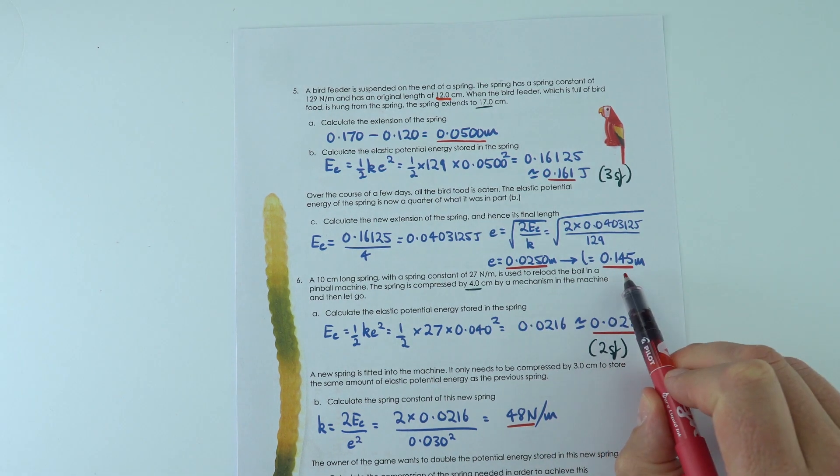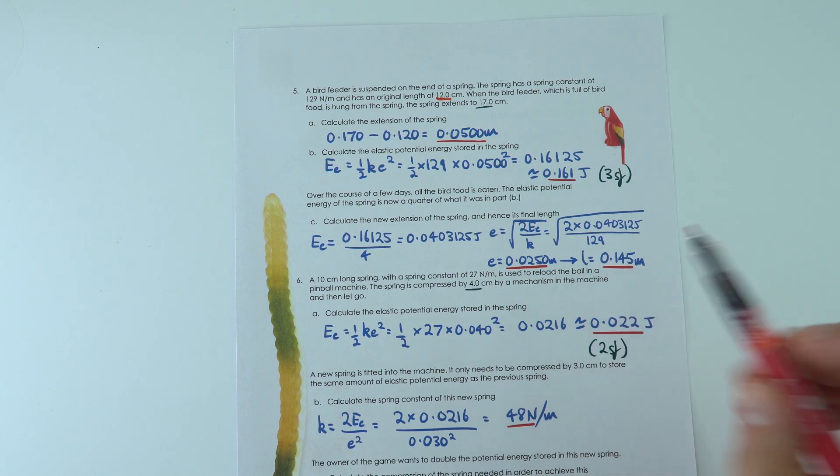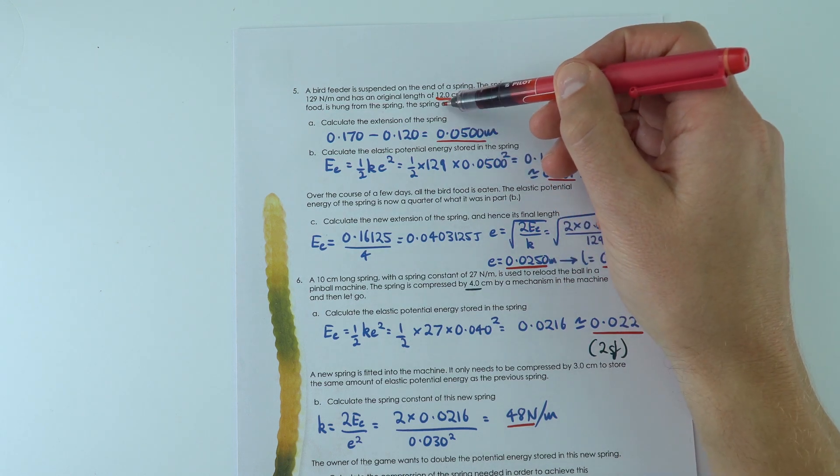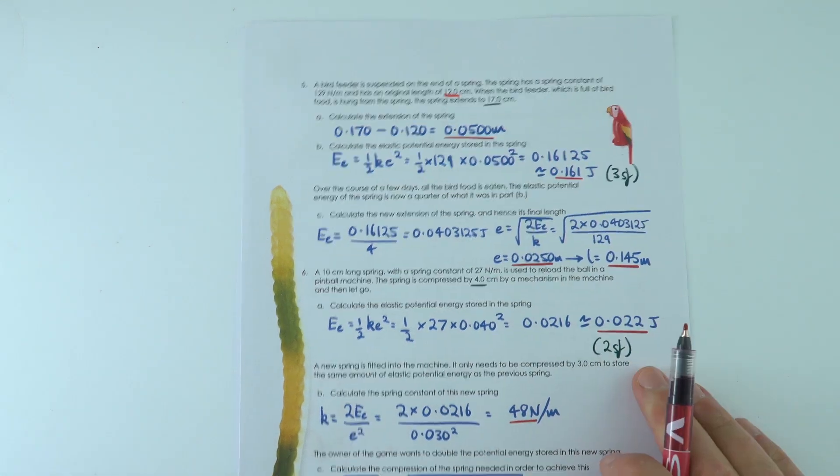And then I've added that to the original length, which is 12 centimeters, to get the final length is about 14.5 centimeters. So 0.145 meters. Don't forget to add your extension to the original length.